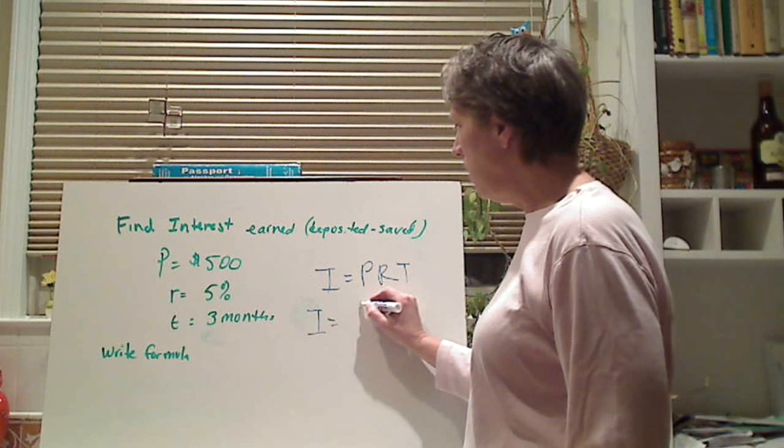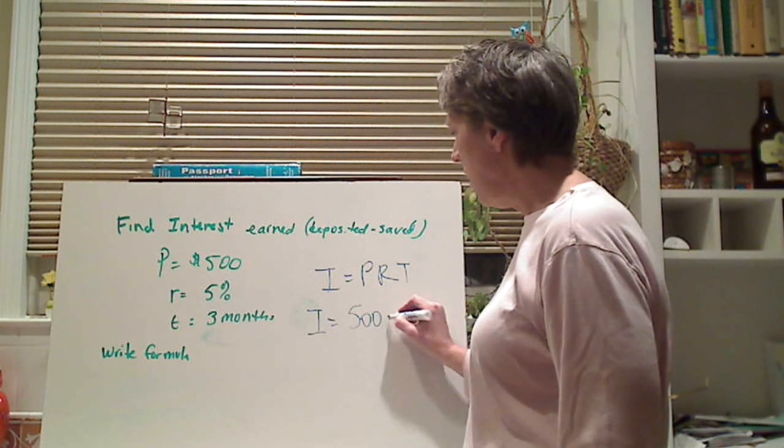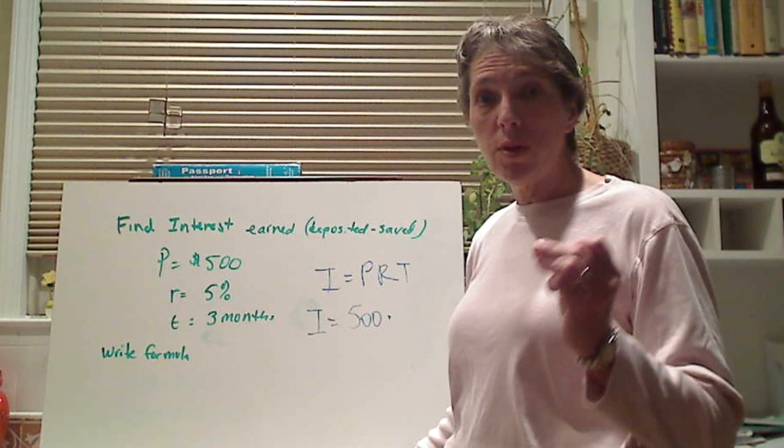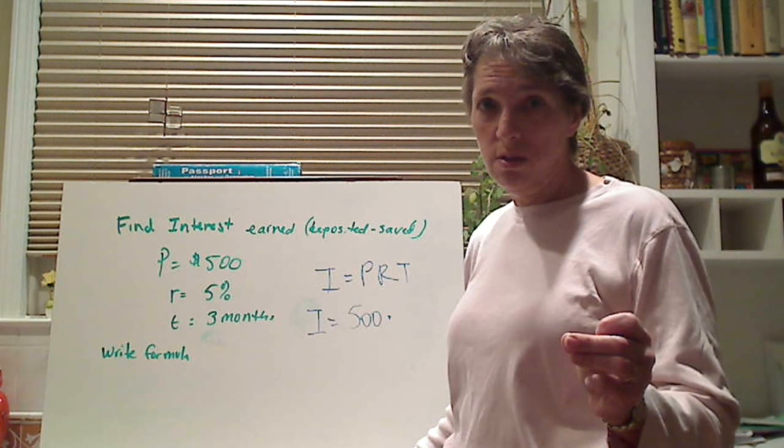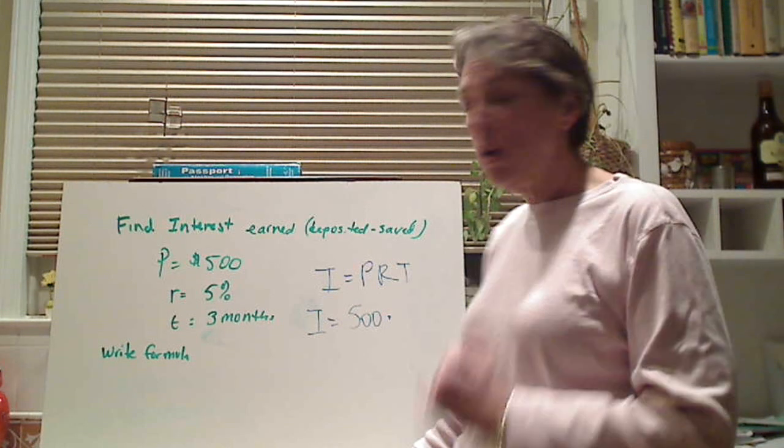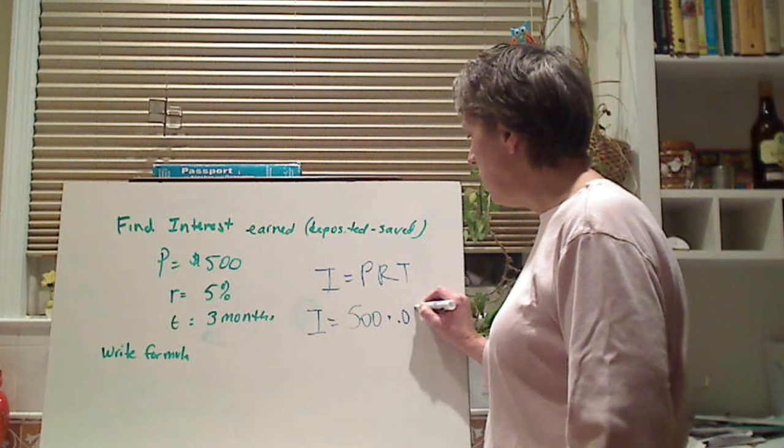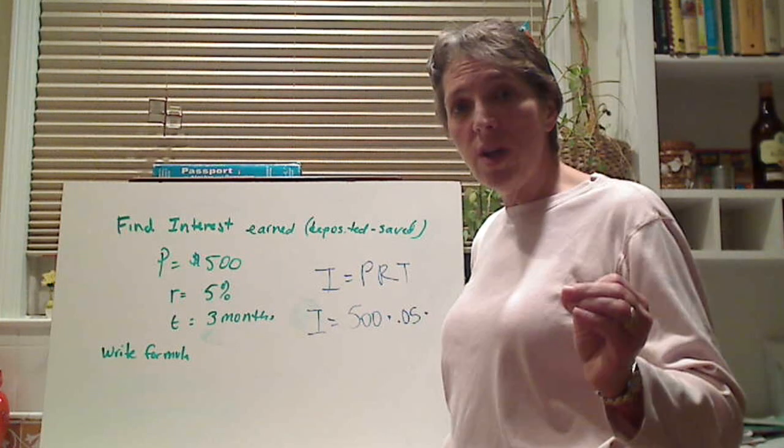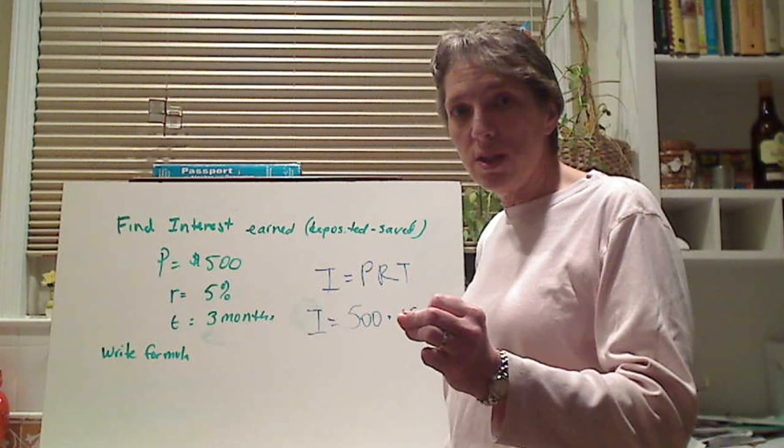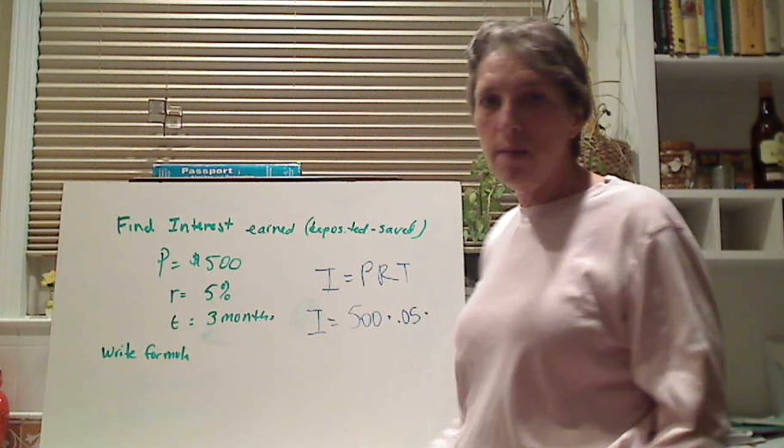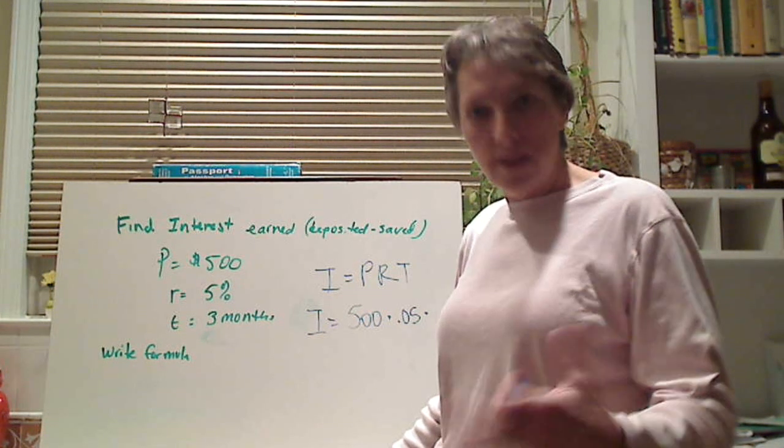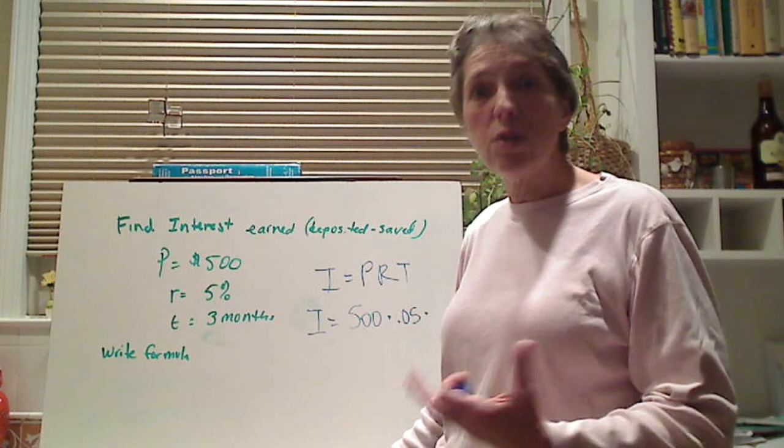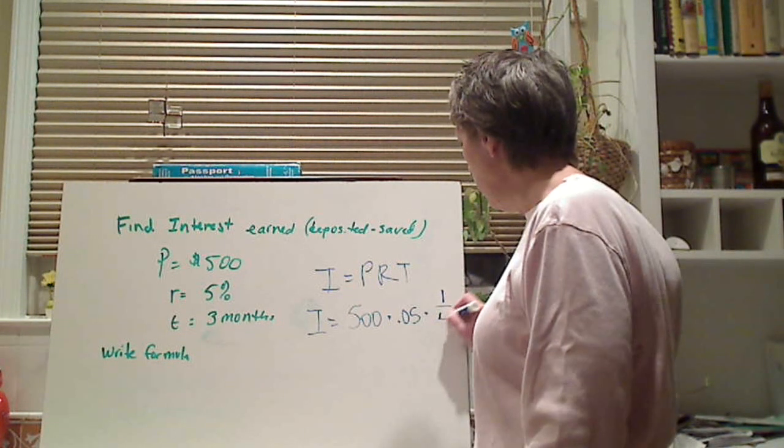Now you put the principal is 500 times the rate. We always change the rate from the percent to a decimal. So if it's 5%, we have to put it in our formula as 0.05. Don't forget that. You have to change the percent to a decimal in the formula. And then three months. And what did I say about three months? Yes, it has to be written as a fraction. Three months is 3 over 12, which is 1/4.